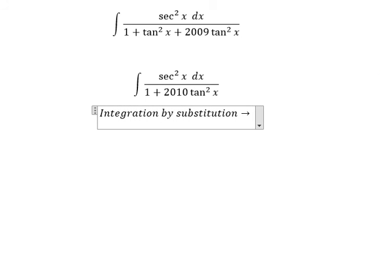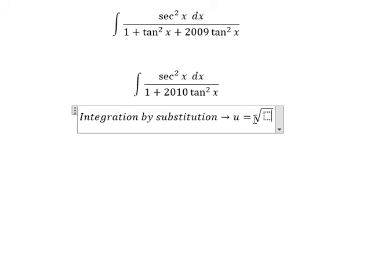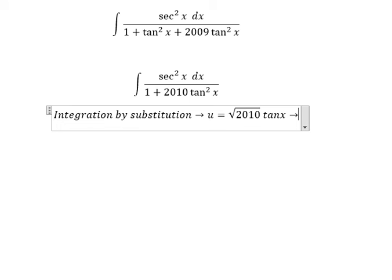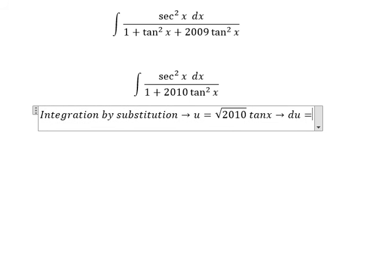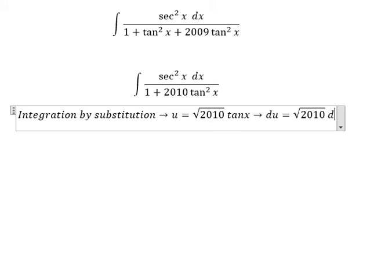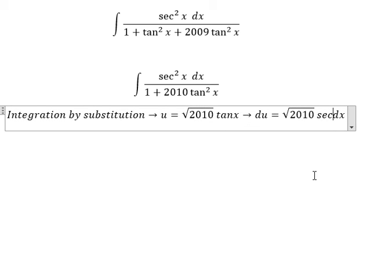So I put u equals the square root of two thousand and ten tan x. du equals the square root of two thousand and ten times secant of x squared dx.